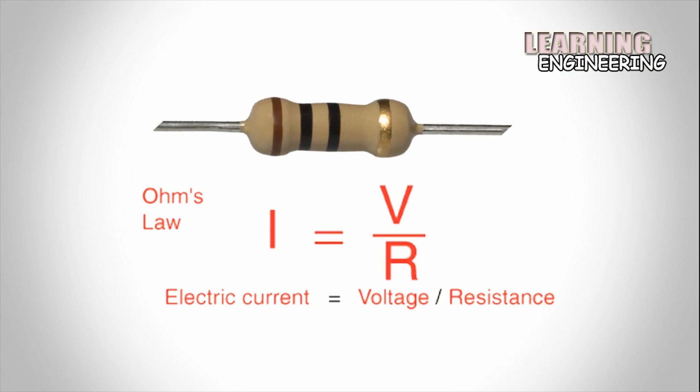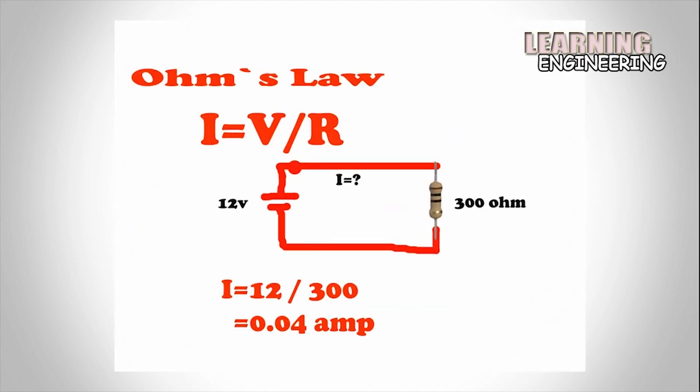For example, if a 300 ohm resistor is attached across the terminals of a 12 volt battery, then a current of 12 divided by 300 equals 0.04 amperes flows through the resistor.